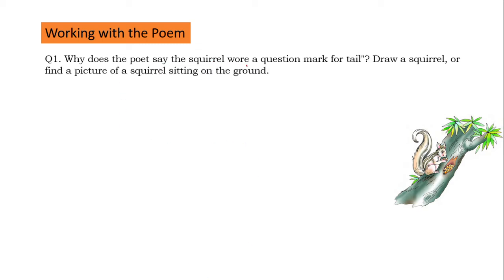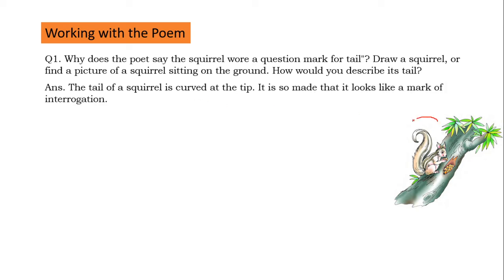First question, why does the poet say the squirrel wore a question mark for tail? Draw a squirrel or find a picture of a squirrel sitting on the ground. How would you describe its tail? The tail of a squirrel is curved at tip. It is so made that it looks like a mark of interrogation, a question mark.